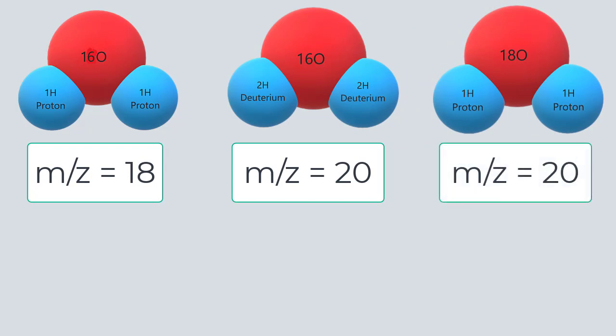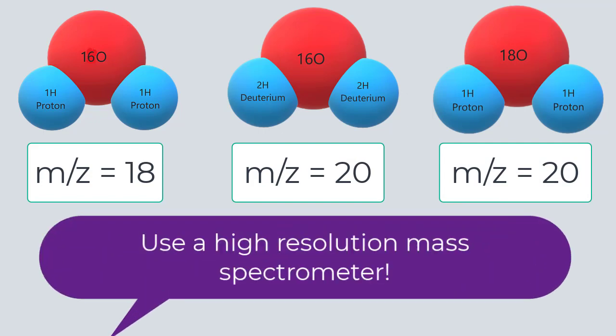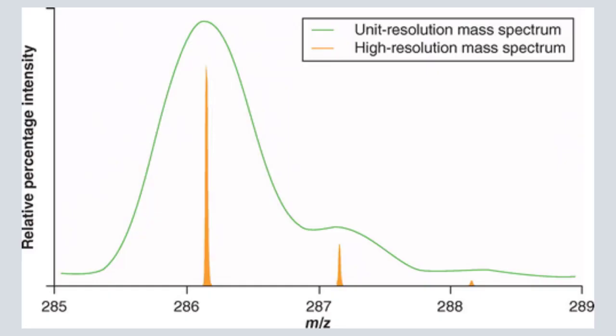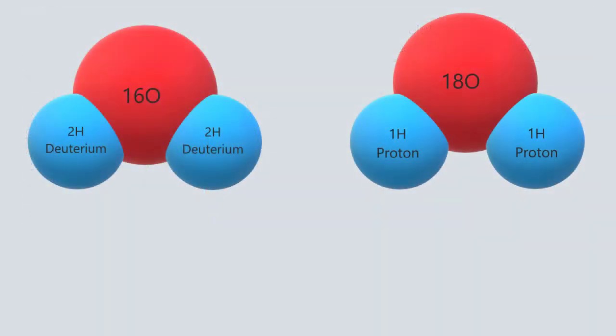When identifying isotopologues like these, it helps to use a high-resolution mass spectrometer. Low-resolution unit mass spectrometers only provide whole numbers for the charge-to-mass ratio of atoms or molecules, while high-resolution spectrometers provide additional decimal places. This is helpful because two molecules with the same unit mass may have different compositions, like our two water molecules, and high-resolution mass spectrometry can help identify which is which.